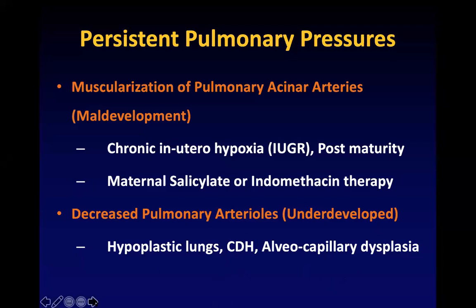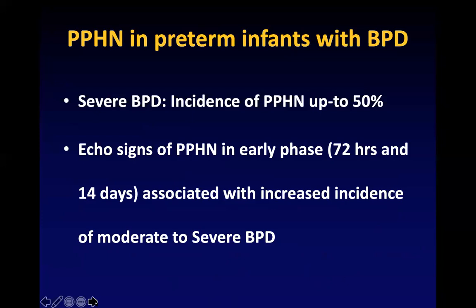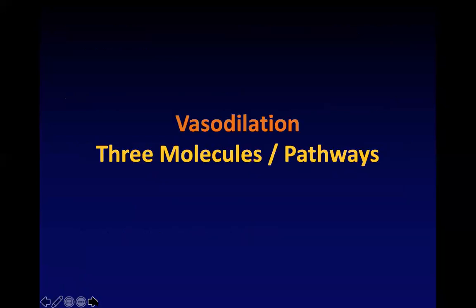There is one variant that is coming up: pulmonary hypertension in preterm babies with BPD. Nearly 50 percent of patients with BPD have pulmonary hypertension. Severe BPD patients need PPHN management apart from managing the lung disease. Echo signs of PPHN in these babies are seen as early as 72 hours to 14 days and are associated with increased risk of severe BPD. BPD could be a reason for PPHN and PPHN could be a reason for BPD — they are closely associated.